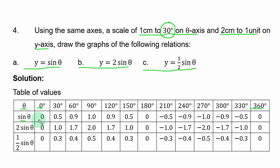For sin θ, you check the sine values for each angle. Sine 0° = 0, sine 30° = 0.5, and so on. Now what you do for 2 sin θ is check sin 0° and multiply it by 2. Note that some values are approximated, so to avoid error you use the original values. When you get to the next angle, you check sin 60° and multiply it by 2.